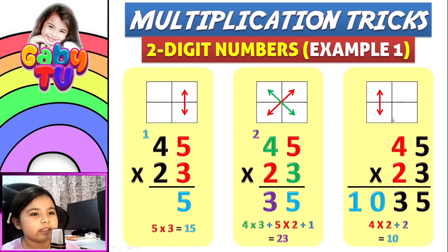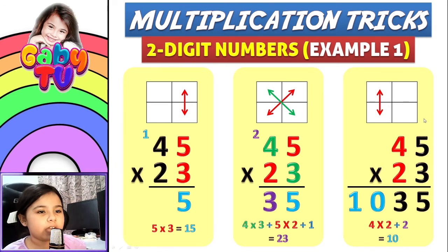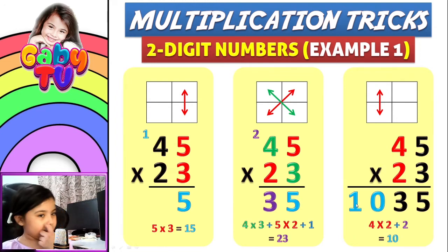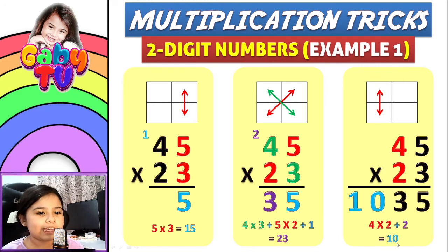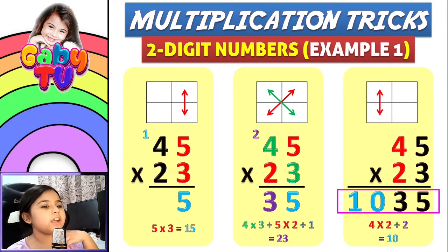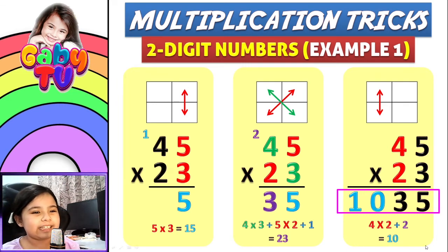Step three: we multiply the red numbers but this time it's on the left. Four times two, then you add two — which came from here — so four times two plus two equals ten. You put the ten here. The product is 1035. Easy, right?